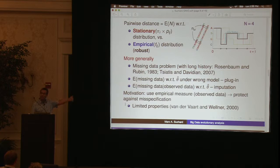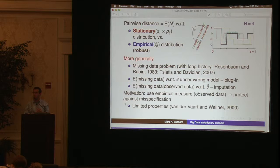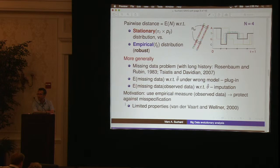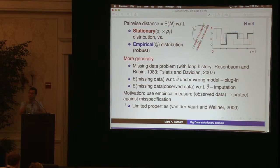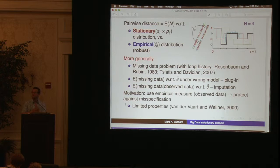My final missing data estimate is going to be the expectation with respect to the generative model P, given my plug-in estimator. Or I might take the expectation with respect to the generative model with my plug-in estimator, of the expectation of the missing data given the observed data. The question is how accurate your answer is — it has to do with the distance between those two values, and unfortunately that's going to depend on whatever your simple model is.